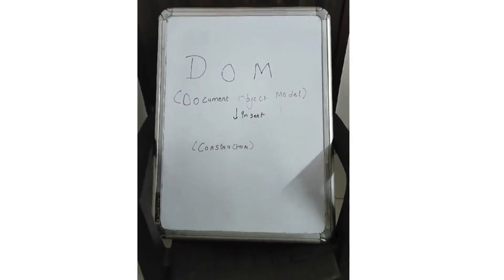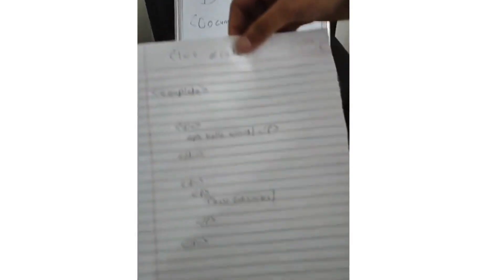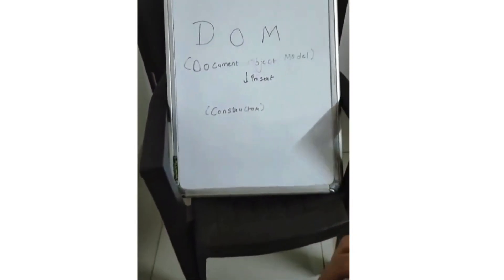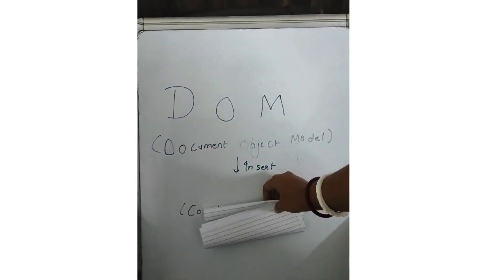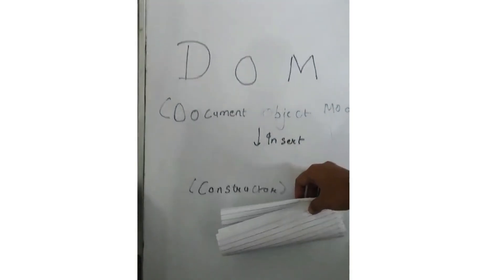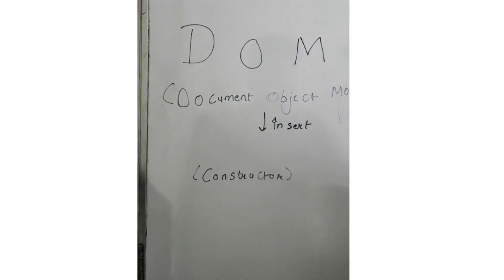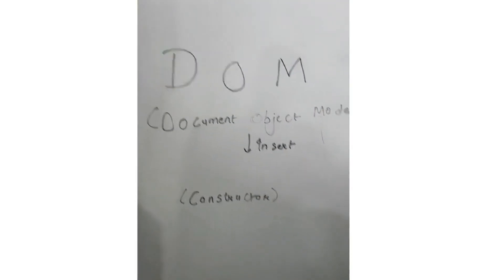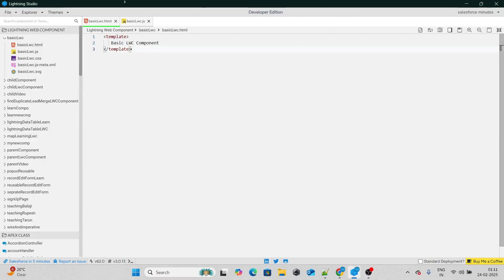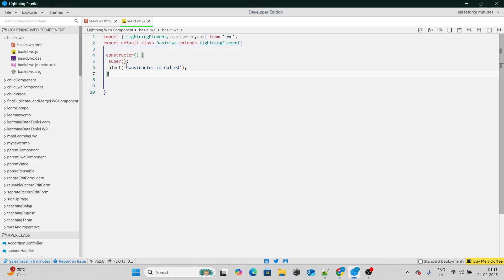Consider this as our DOM and this is our LWC code. Now this LWC code we are going to wrap it up and then insert it inside the DOM. And as soon as we do that, the constructor will get called. So as you can see, I have created a lightning web component called basic LWC, and it also has a JavaScript file where I have called constructor which alerts 'constructor is called'.